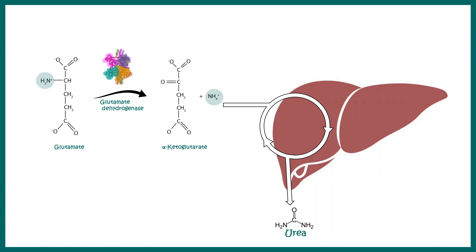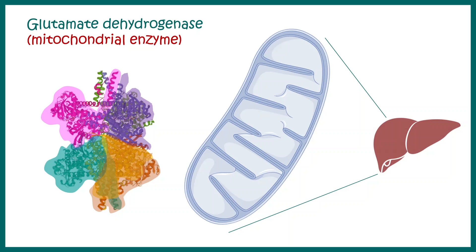Because ammonia is toxic, it would be transformed into urea via the process of the urea cycle. This enzyme, glutamate dehydrogenase, is situated in the liver mitochondria. If you look at the liver mitochondria, you'll find this enzyme is pretty abundant.